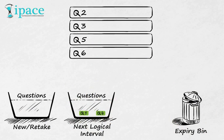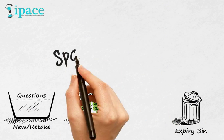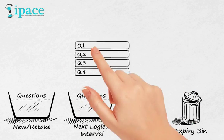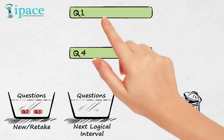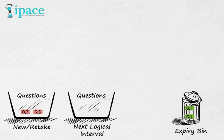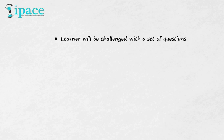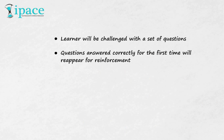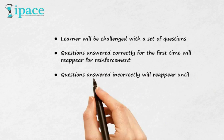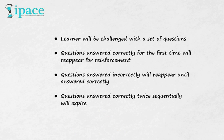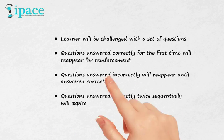On the next attempt, if the learner attempts the questions correctly, then it is assumed they have gained mastery and the questions are moved to the expiry bin. To summarize, in spaced learning: learners will be challenged with a set of questions; questions answered correctly the first time will reappear for reinforcement; questions answered incorrectly will reappear until answered correctly; and questions answered correctly twice sequentially will expire.